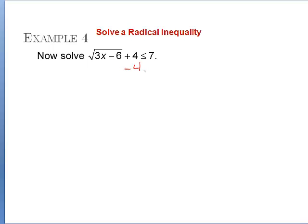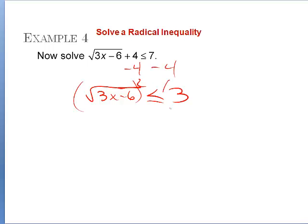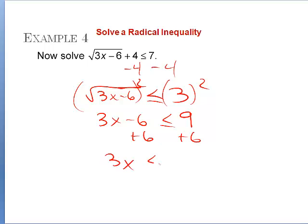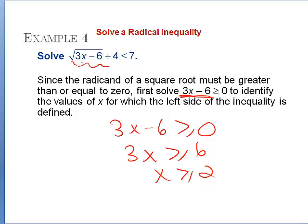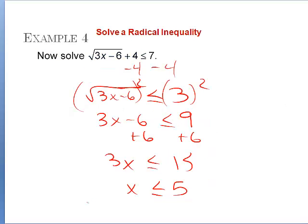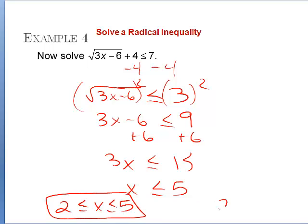We subtract 4 from both sides to get √(3x−6) ≤ 3. Squaring each side gives 3x − 6 ≤ 9. Adding 6 gives 3x ≤ 15, so x ≤ 5. For the expression to be defined it also needs x ≥ 2, so our final answer is 2 ≤ x ≤ 5, written in interval notation as [2, 5].